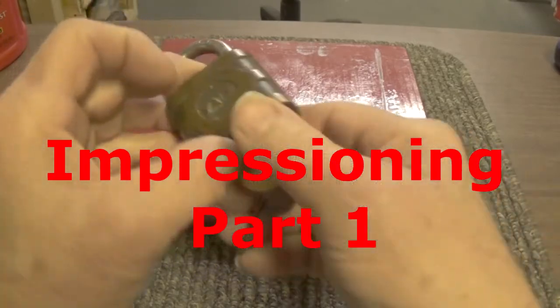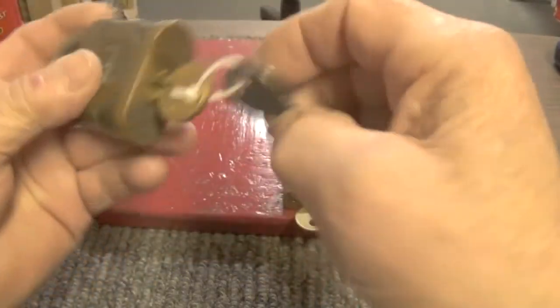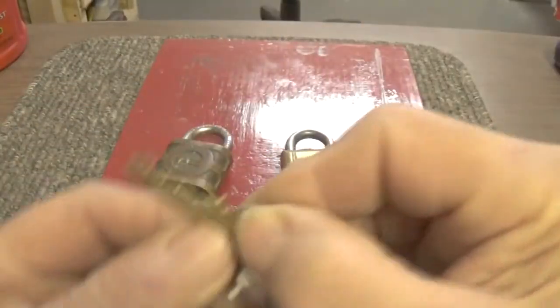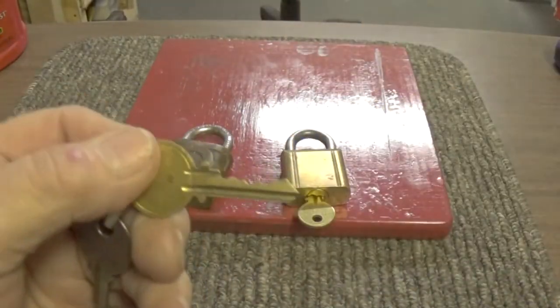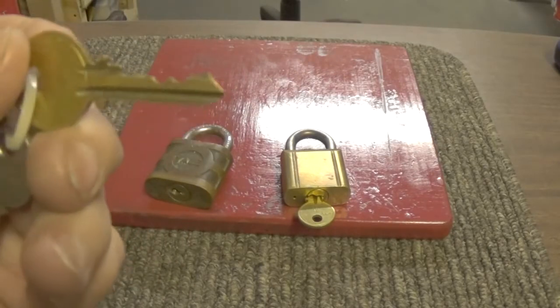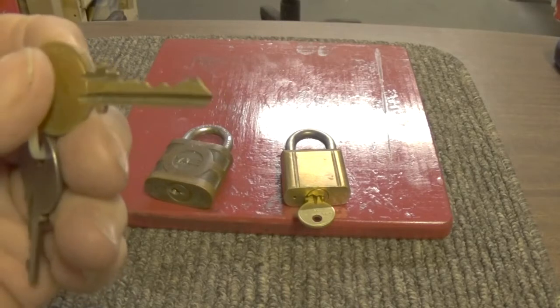Okay, I'm going to make a video on key impressioning. I have two Yale locks - this one has a working key. Usually what I do on these locks before I start the impressioning is I cut a small cut on my key with a key duplicating machine.